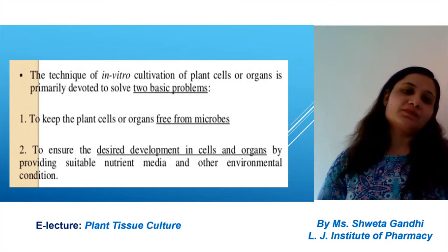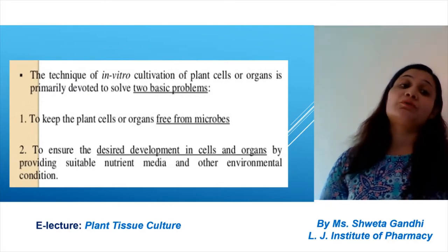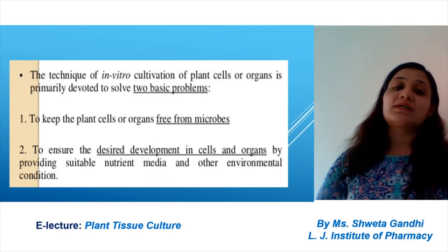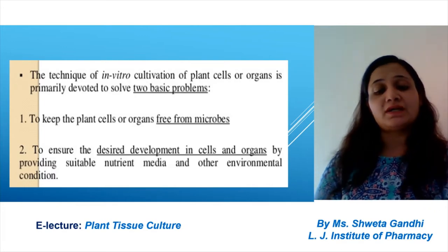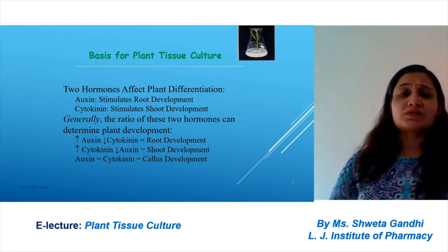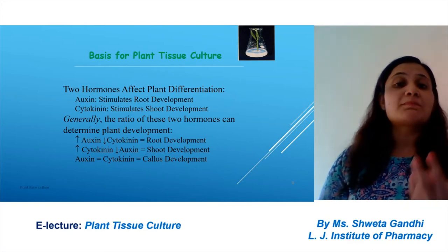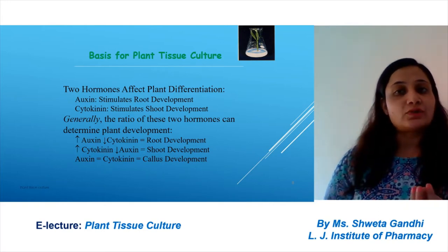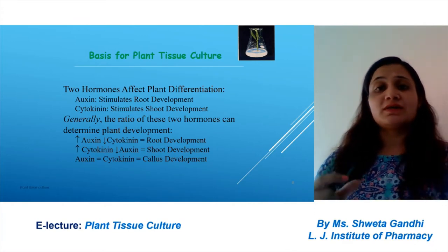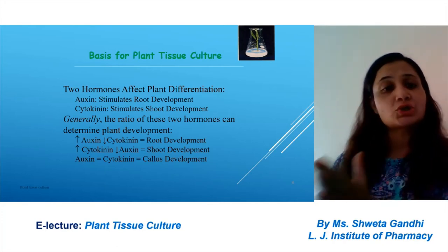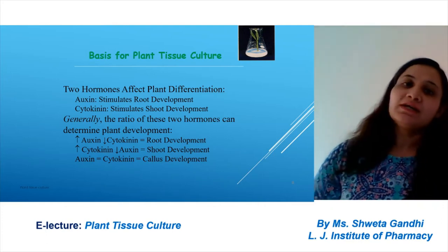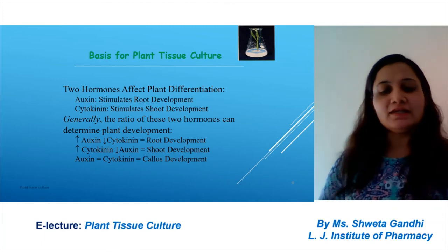What are the basic problems? To keep the plant cell free from microbes, to keep the condition sterile, and to ensure that the desired development of cells and organs takes place in the provided nutrient media are the major basic problems. The most important factor is the growth regulator. For plant tissue culture we must give importance to plant growth hormones — auxin and cytokinin. Auxin stimulates root development and cytokinin stimulates shoot development. An equal ratio of these hormones will initiate callus development.